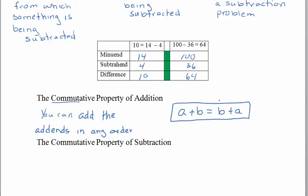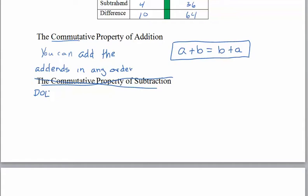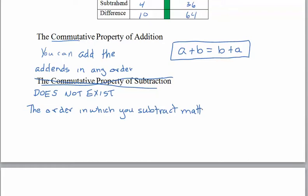The question is: what about a commutative property of subtraction? Can you subtract the pieces in any order? Does 5 minus 3 give you the same thing as 3 minus 5? It doesn't. So there is no commutative property of subtraction — it does not exist. For subtraction, the order in which you subtract matters; one of those would give you a negative answer.